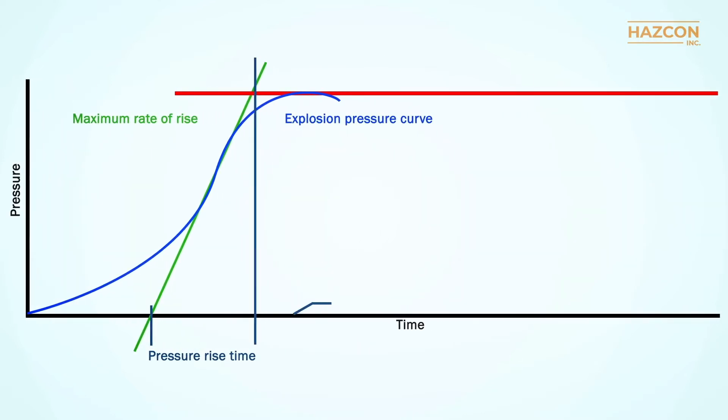Pressure piling changes the dynamic. The pressure curve becomes an irregularly shaped wave that illustrates the cascading effect of pressure piling, the multiple explosions that take place. Pressure piling involves, as the name implies, the buildup of pressure, which can be higher than the expected peak pressure. There is presumption of pressure piling when the pressure rise time is less than 5 milliseconds.